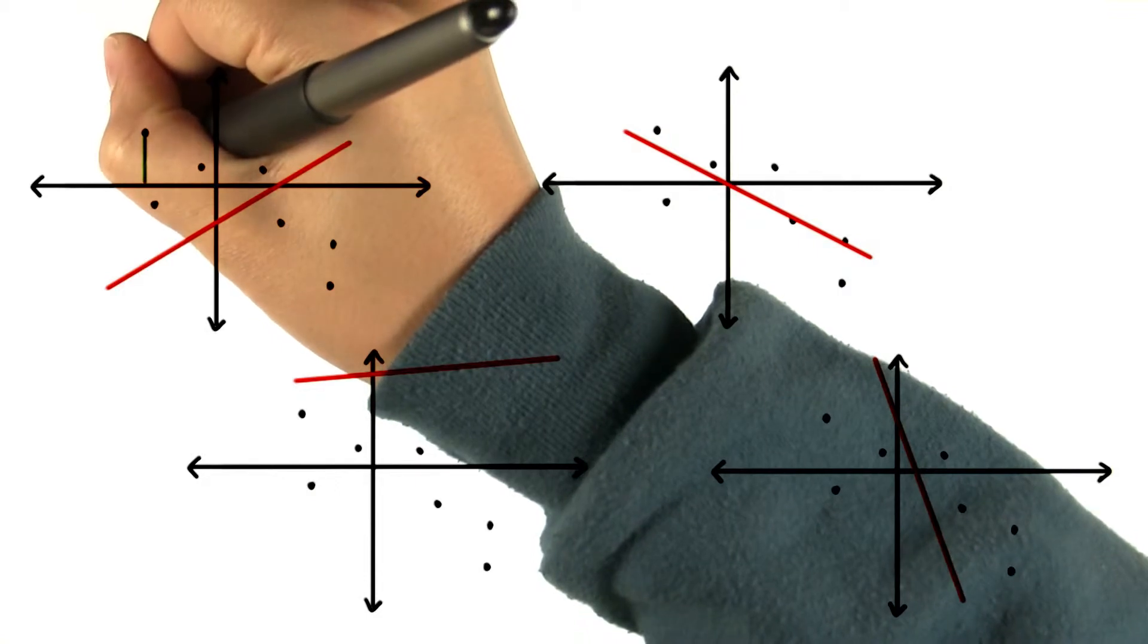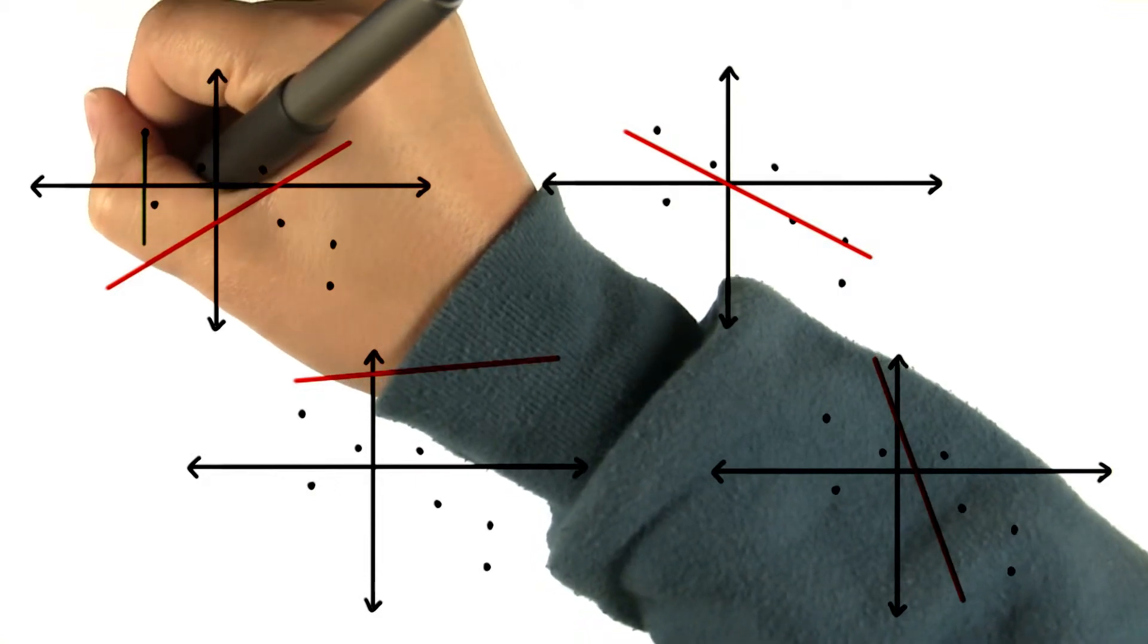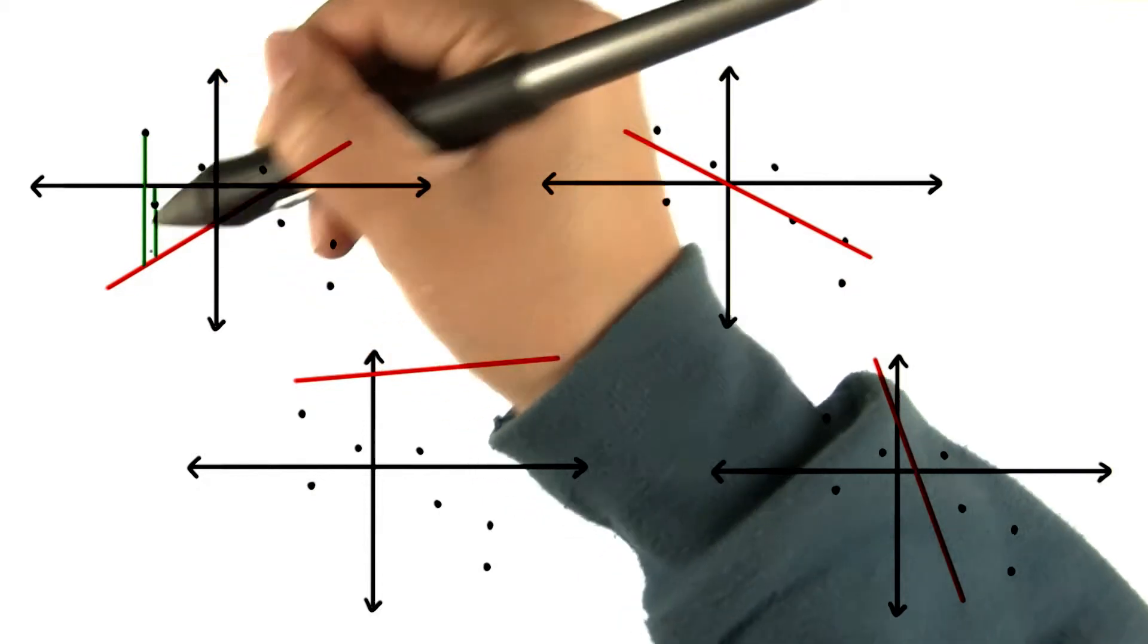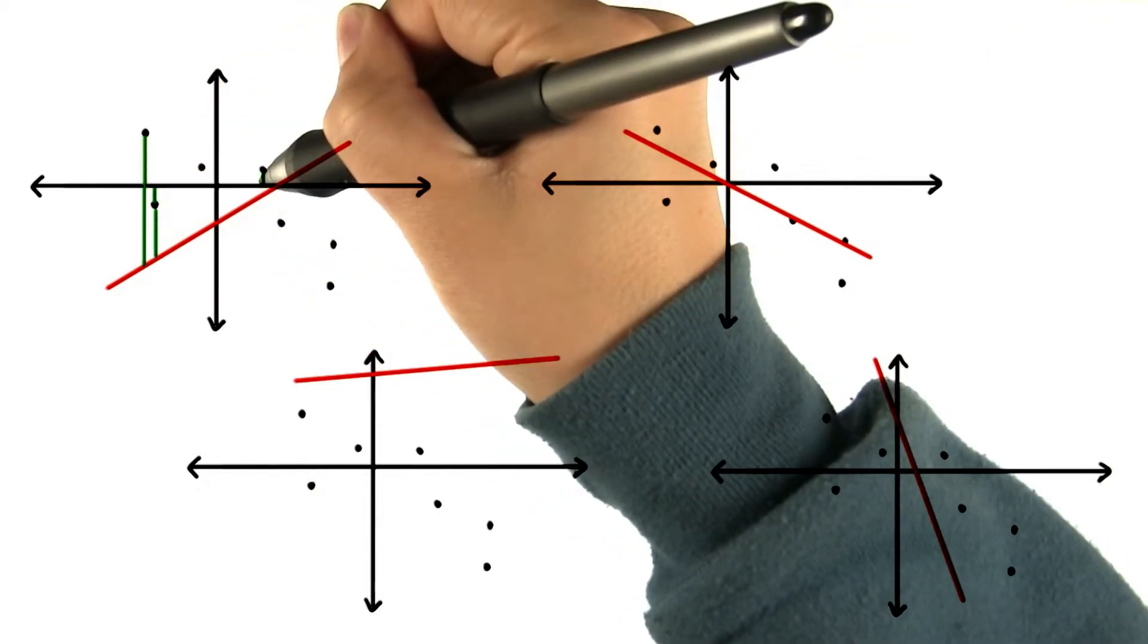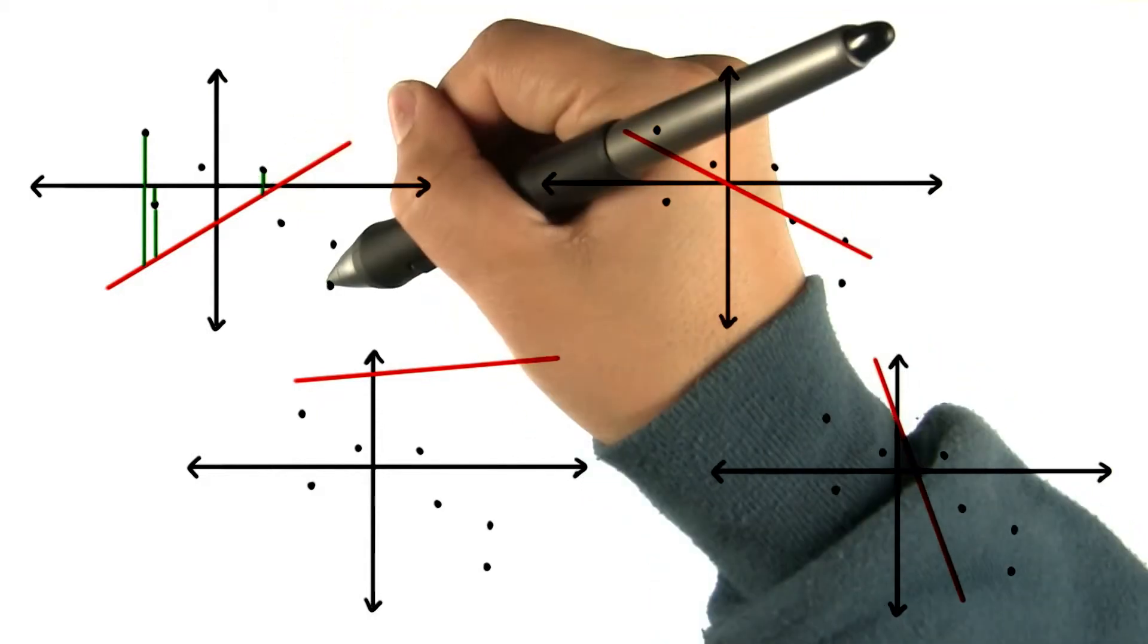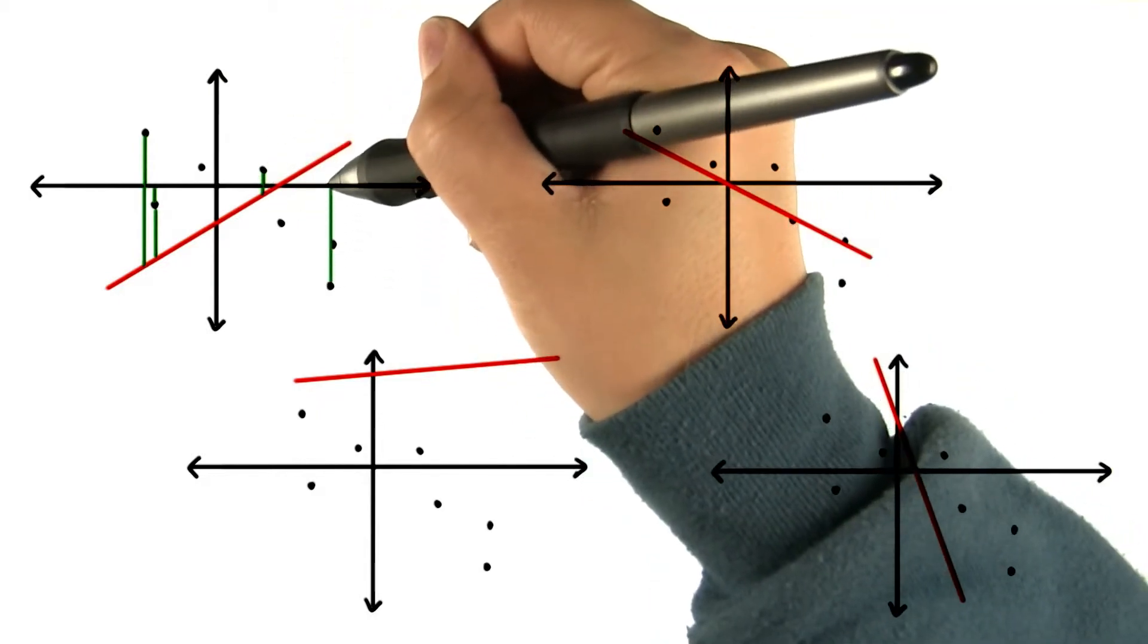For this x value, the expected value is way down here. For this x value, the expected value is also pretty far. This x value looks to be pretty close to the expected value, but these two are really far from their expected values.